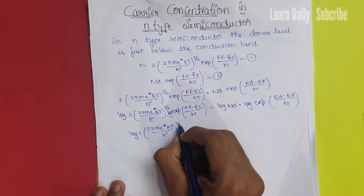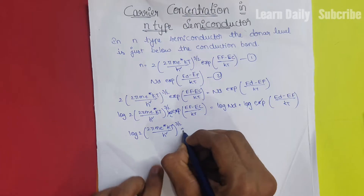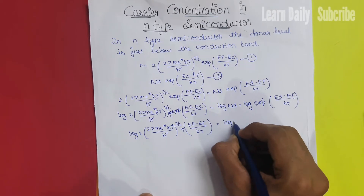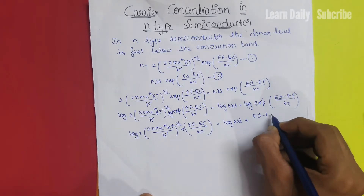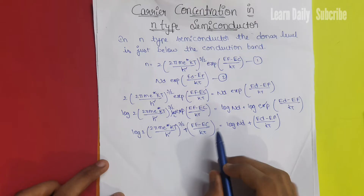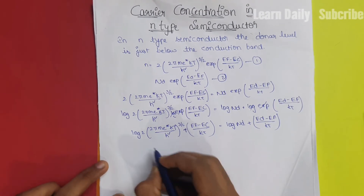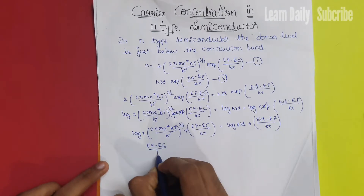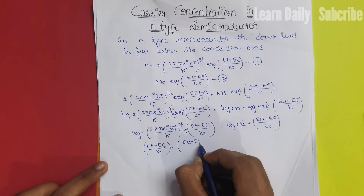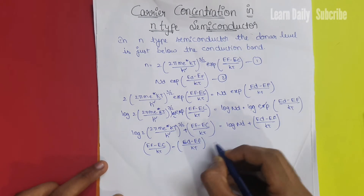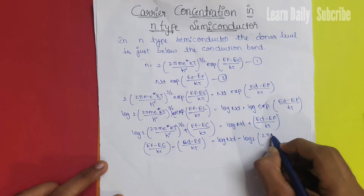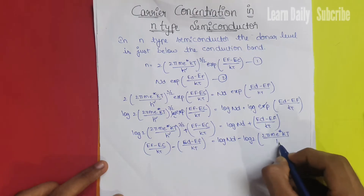Exponential terms cancel. We get (Ef minus Ec) by kT equal to log Nd, and (Ed minus Ef) by kT. Then: (Ed minus Ef) by kT is equal to log Nd, and Ec by kT equals log of 2 into (2π me* kT / h²).